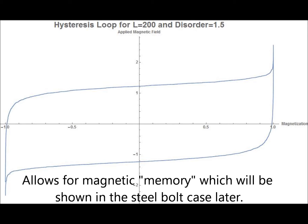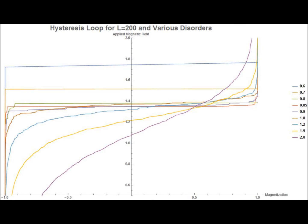We can also plot multiple hysteresis loops of various disorders on the same plot. This graph shows the critical disorder corresponds to a critical applied field of about 1.35. Low disorders have sharp jumps, like in 0.6, whereas higher disorder plots are more gradual. We saw this in the simulations video also.